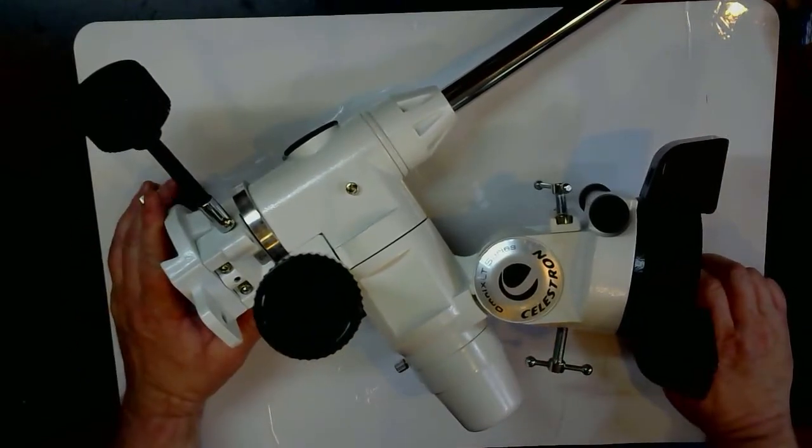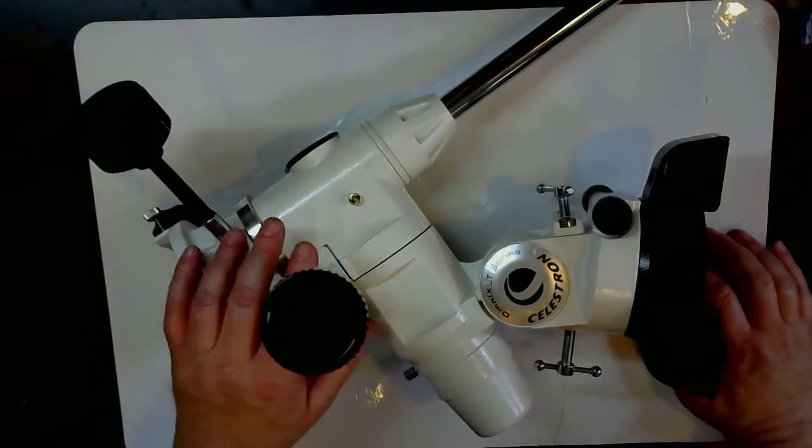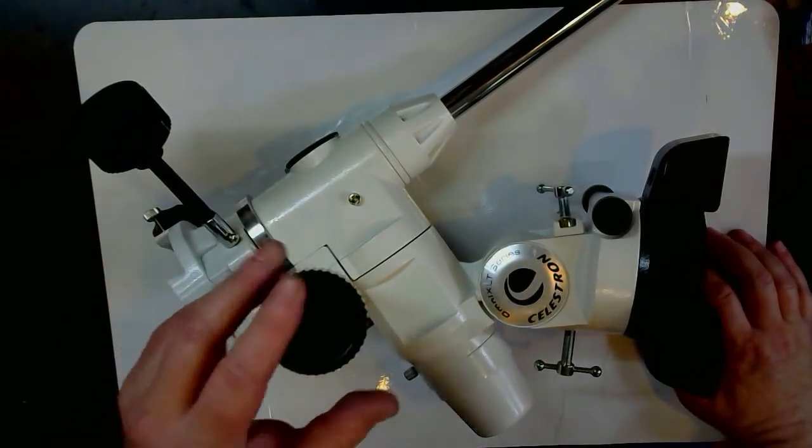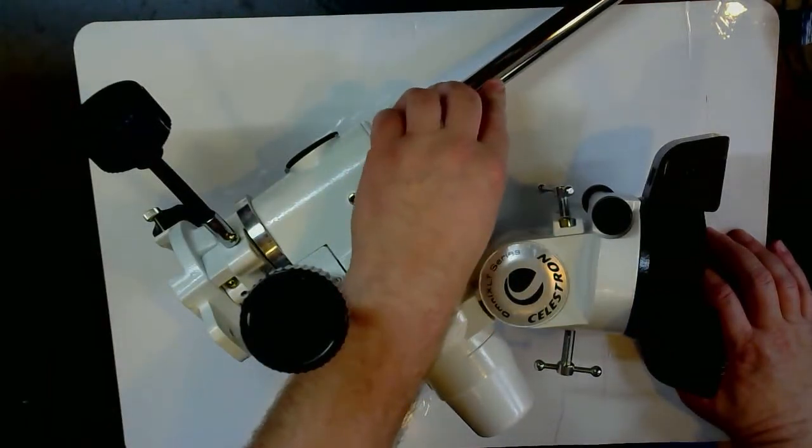The factory setup has some parts we'll take off that we don't need right away. These are things you can basically put off to the side. There's some slow motion controls, this is the counterweight shaft that comes off.